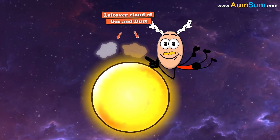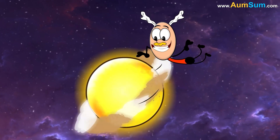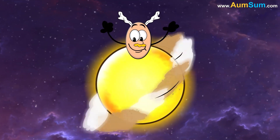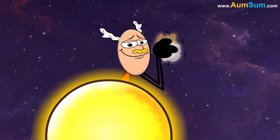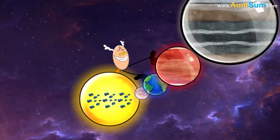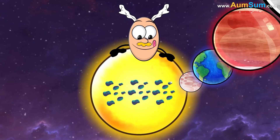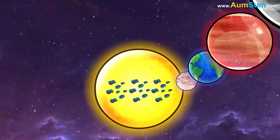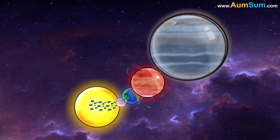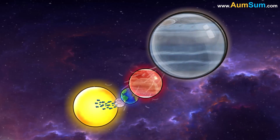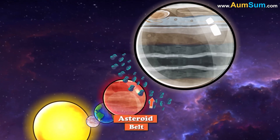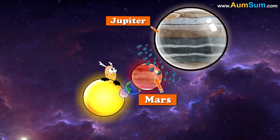Leftover cloud of gas and dust started spinning around the Sun. These bits began to collide and stick together and slowly converted into planets. But still small bits of rocks were left over. These are called asteroids. Most of these asteroids got pulled by Jupiter's huge gravitational pull and eventually formed an asteroid belt between Jupiter and Mars.